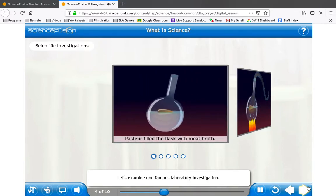Let's examine one famous laboratory investigation. Years ago, most people thought that organisms were spontaneously generated, that they just appeared. Louis Pasteur decided to test this opinion to see if it was a scientific fact. He performed a careful experiment with sterilized meat broth to see if organisms spontaneously appeared. Click the pictures to learn about Pasteur's experiment.